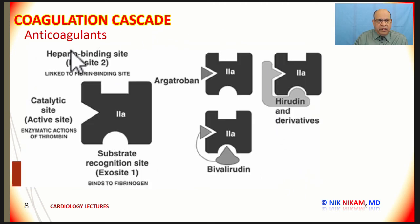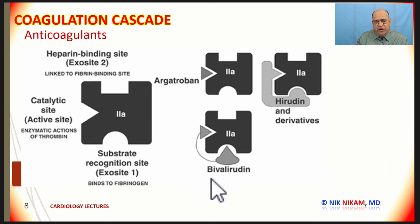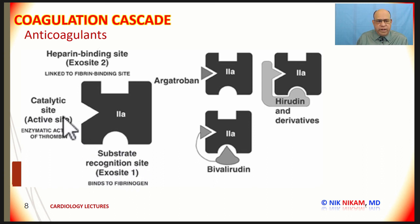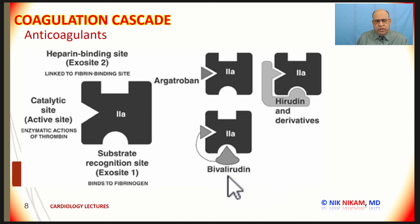Now let's look at other anticoagulants: argatroban and bivalirudin. Bivalirudin, also known as Angiomax, is commonly used in the cardiac catheterization lab during coronary interventions. They primarily act on thrombin and are anti-thrombin agents. There are two active sites on thrombin: the substrate recognition site and the catalytic site. Argatroban blocks the catalytic site, whereas bivalirudin or Angiomax blocks both the substrate recognition site and the catalytic site.